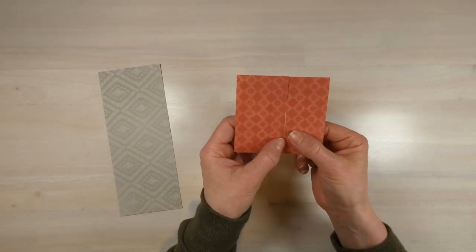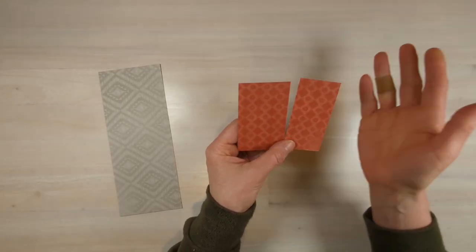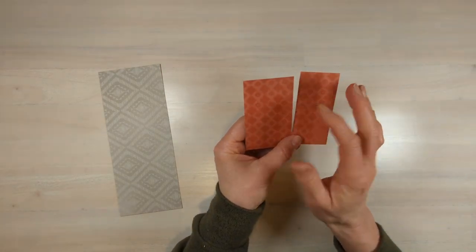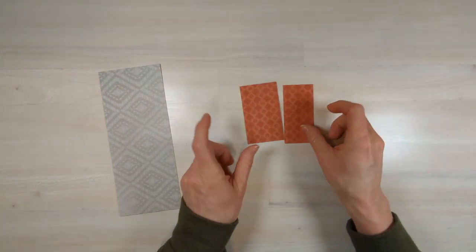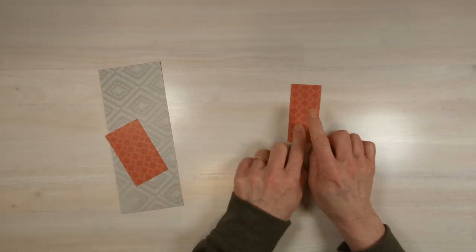Before you put your paper trimmer away, cut this. You can cut it in half. I did cut mine at 2 inches and then whatever is left over, and we're going to use this on the front of our card and this on the inside.